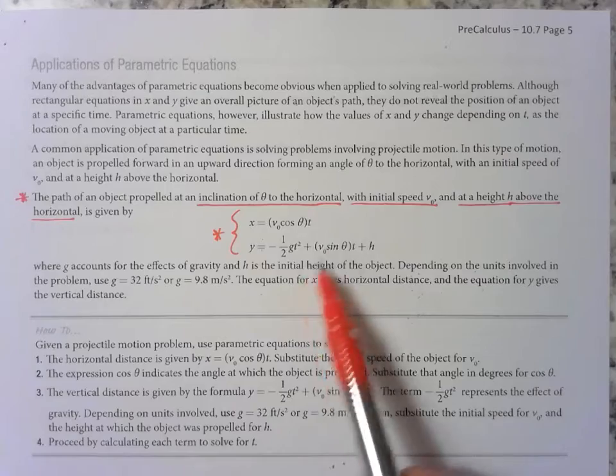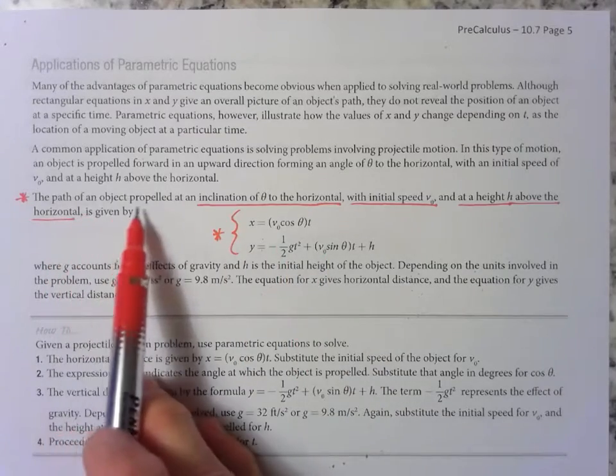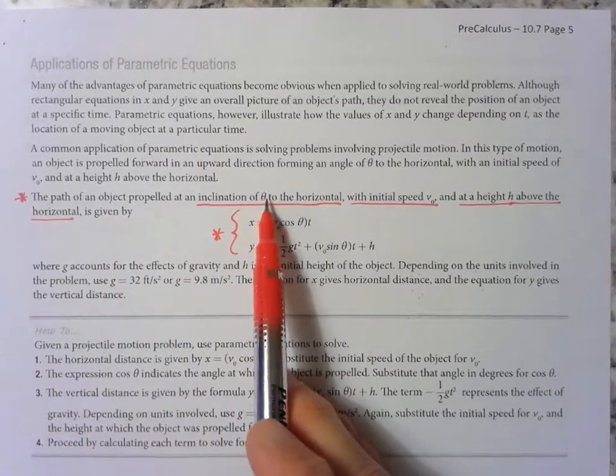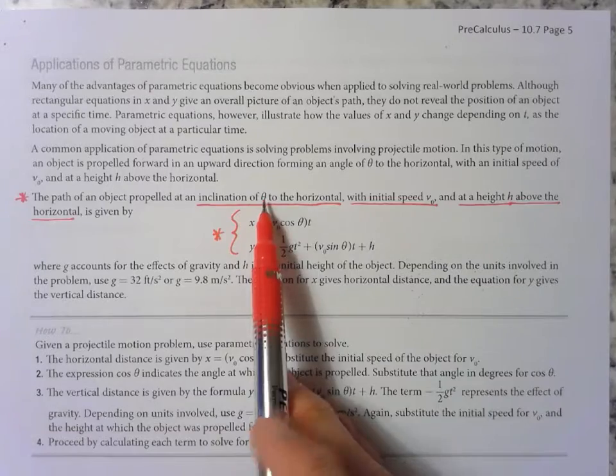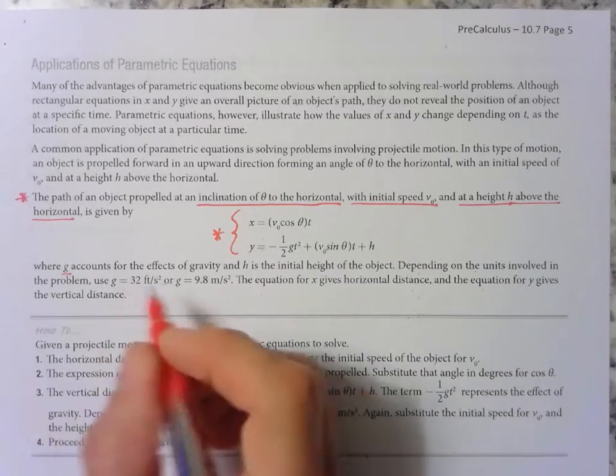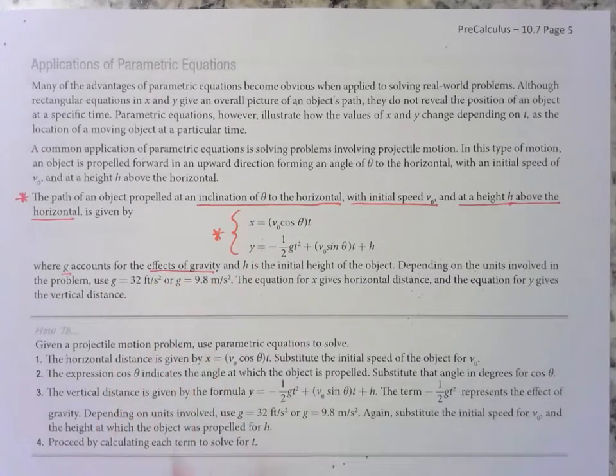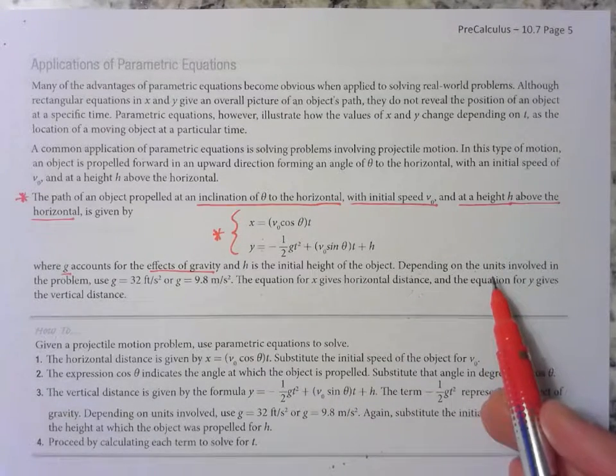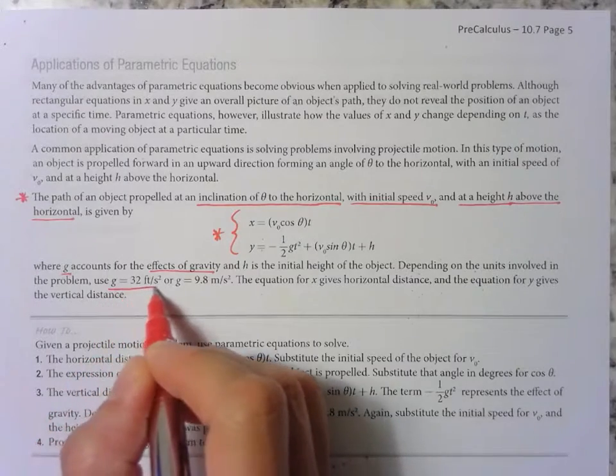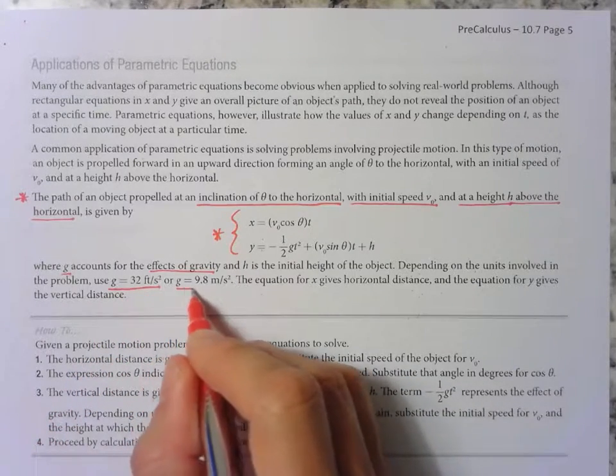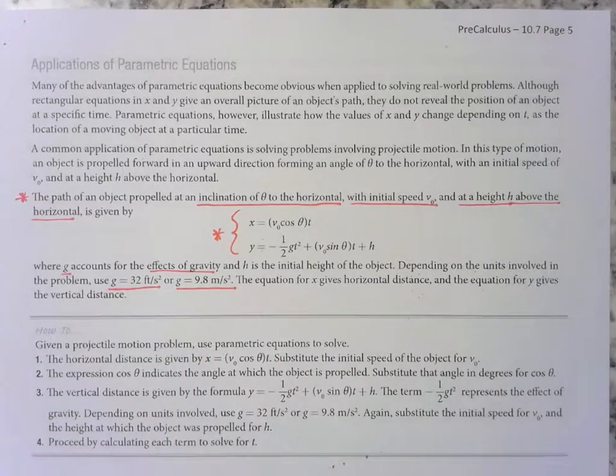So these are our formulas when we're dealing with an object that is propelled at a specific angle. g is going to be the effect of gravity. And depending on what you're dealing with, whether it's feet or meters, you're going to use g is 32 or g is 9.8. So all of that is very important information for solving these types of problems.